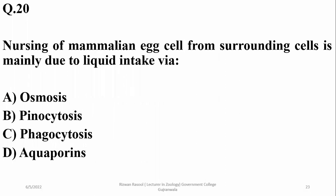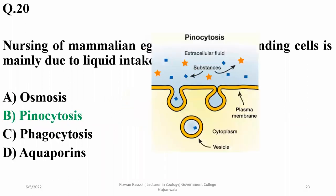Question 20: The nourishing of mammalian macrophage cells from surrounding cells is mainly due to liquid intake via the cells — rather than osmosis. Right option is B (pinocytosis/liquid intake).